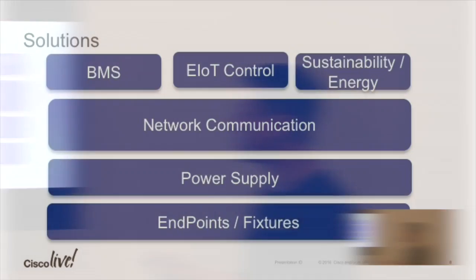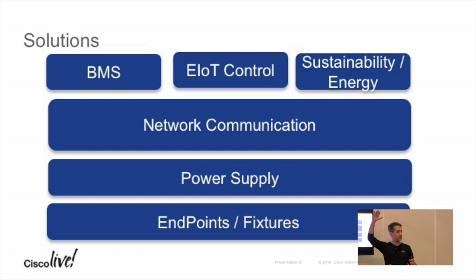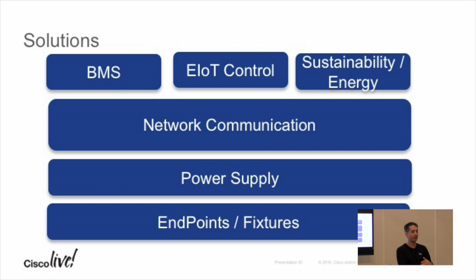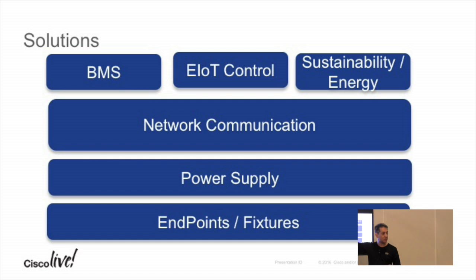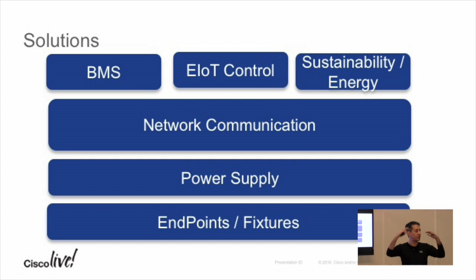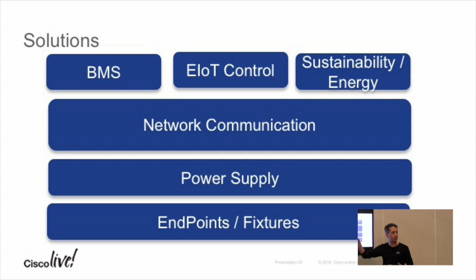We did that because of a reference design. We have endpoints on the ceiling that feed into a needed power supply — these things need power. Typically you run a power line and a serial data line to ceiling devices. This is converging logically into an Ethernet connection, so the power supply winds up logically being the switch. Then you need network communication over IP. Applications fall into three buckets: building management solutions, IoT controls, analytics, and sustainability and energy. All three can go over our network communication through our power supplies to power the endpoints.